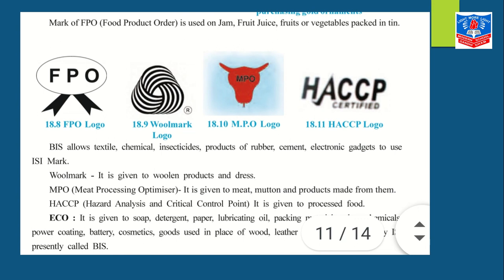HACCP — Hazard Analysis and Critical Control Point — is given on processed foods to certify that processed food products are of good quality. The ECO mark is given to soap, detergent, paper, oil, packing material, color, chemicals, batteries, cosmetics, wood, leather, and plastic products. BIS certifies these, and the ECO mark indicates that these are eco-friendly products that do not harm the environment.